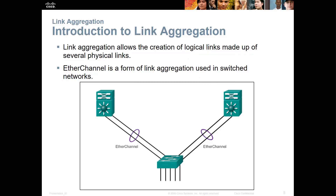Link aggregation allows us to create a logical link made up of several physical links. Basically, if we have two ports, four ports, eight ports on a server and we need additional bandwidth, we can logically group them together, bond them together, so that they work together. On the switch side, they will see that as a logical single connection.